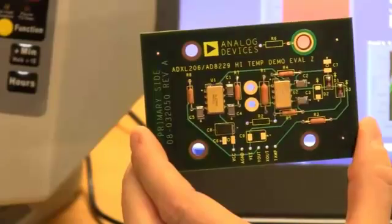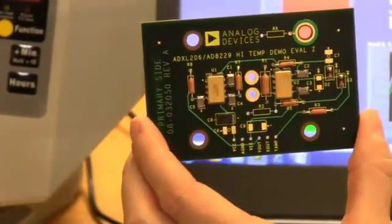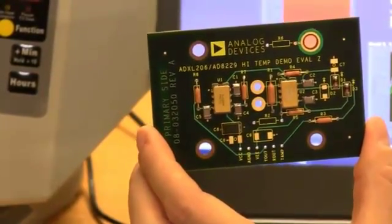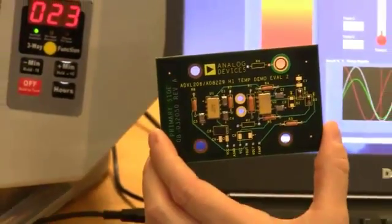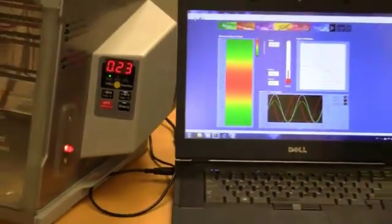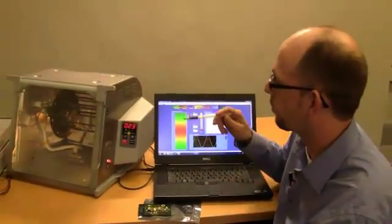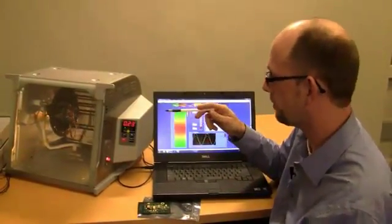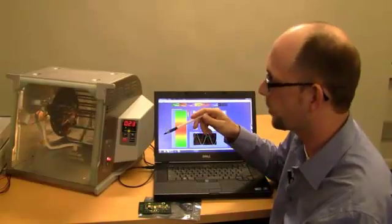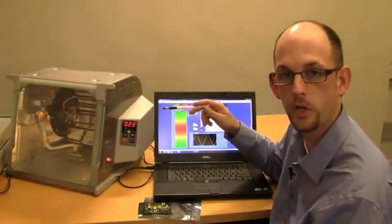As you can see, both of these components are available in hermetic ceramic packages to survive very harsh environments. The demo that we have here today is measuring the temperature gradient in a rotisserie oven. We're doing this by measuring temperature and position.